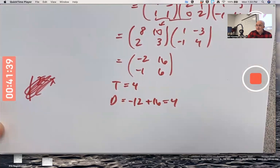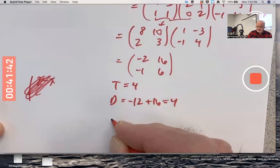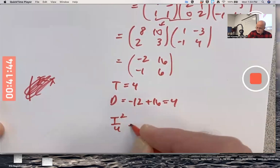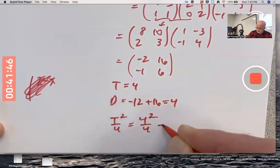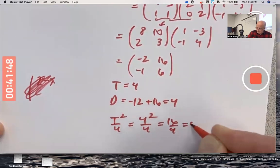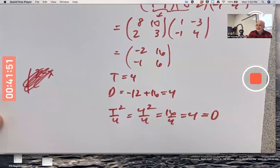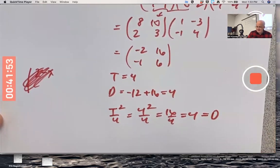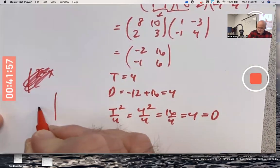Yeah, I think we're on the repeated root parabola. T squared over four here is four squared over four is sixteen over four is four. And the trace determinant plane, the values of T and D for this matrix are going to put us on the repeated root parabola.